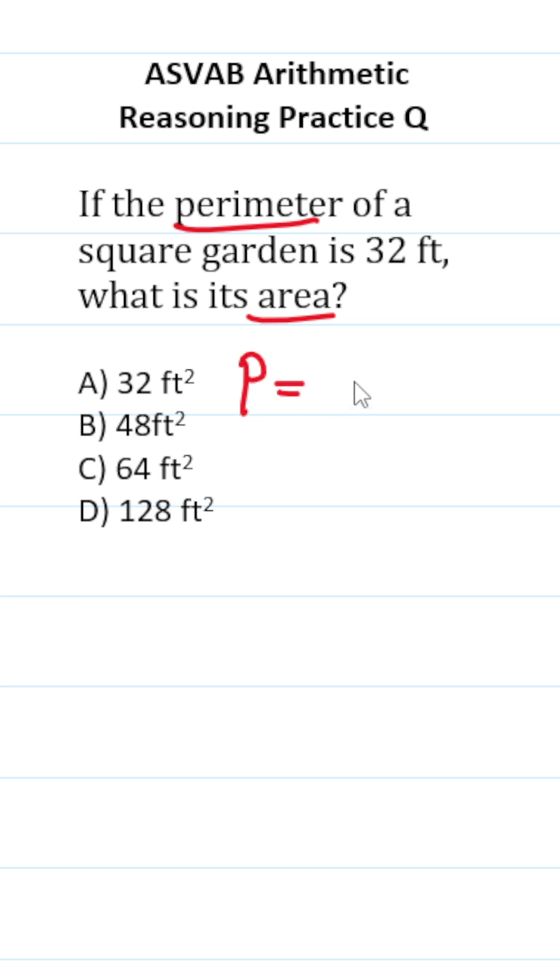Perimeter of a square is equal to P equals 4S, whereas the area formula says the area of a square is equal to S squared, where S, of course, refers to the side length of a square.